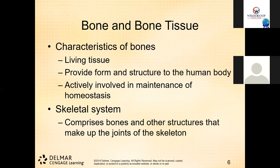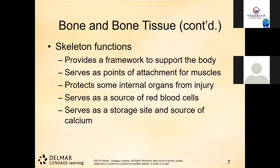Bones provide structure for the human body and allow us to move, keeping our body in shape with assistance from the muscular system. They are actively involved in maintaining homeostasis and balancing the body, also assisted by the nervous system. The skeletal system in an average person has 206 bones, most of which are found in the appendicular skeleton — the upper and lower extremities.